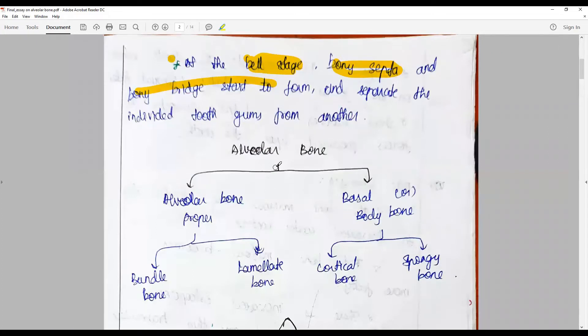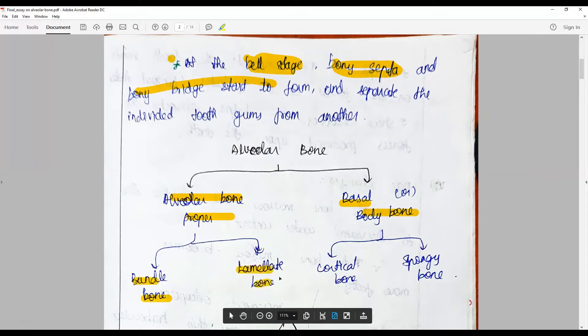Classification: Alveolar bone comprises alveolar bone proper and basal or body bone. Alveolar bone proper is divided into bundle bone and lamellated bone. Basal bone is divided into cortical bone and spongy bone, depending upon thickness.